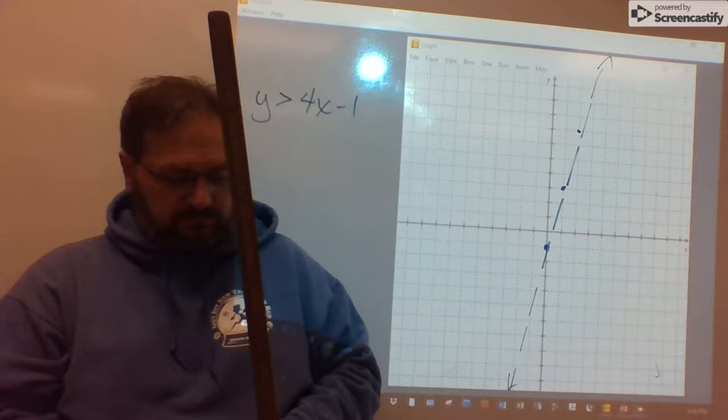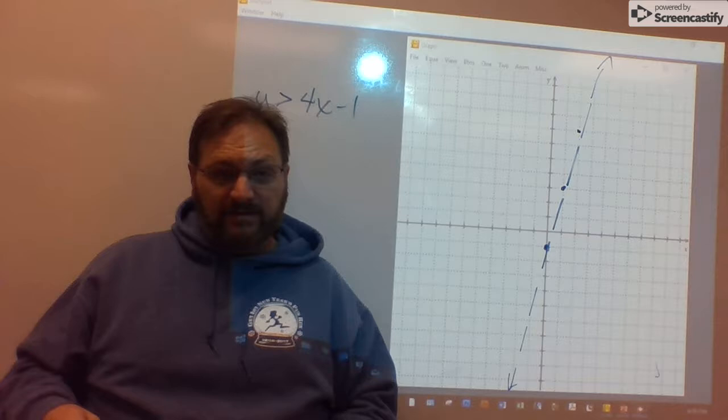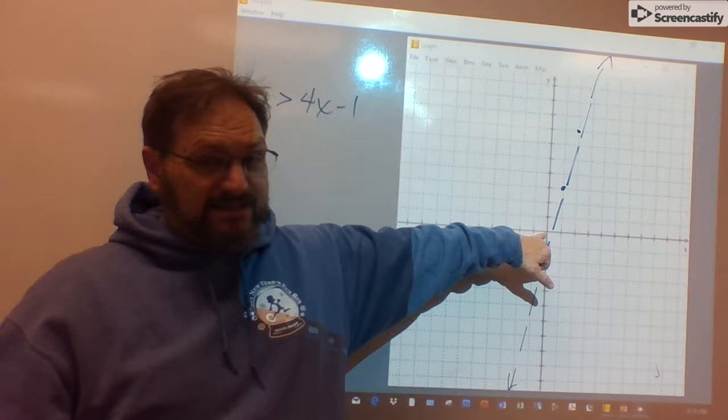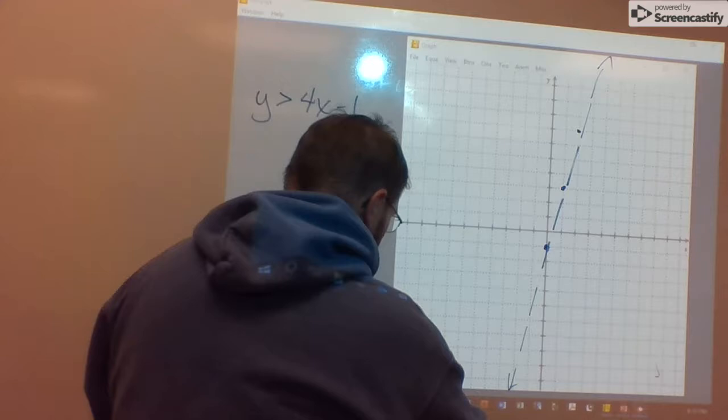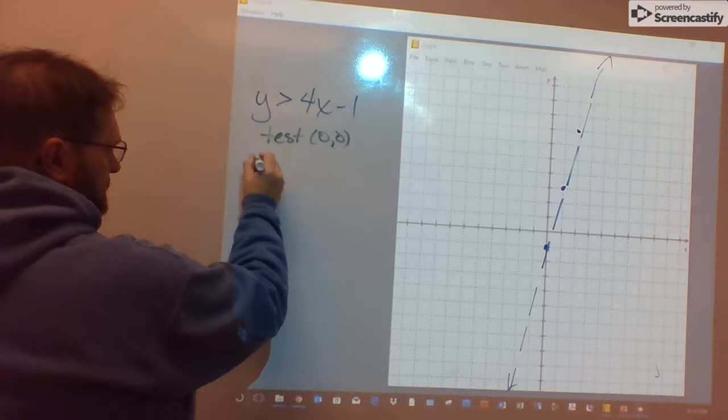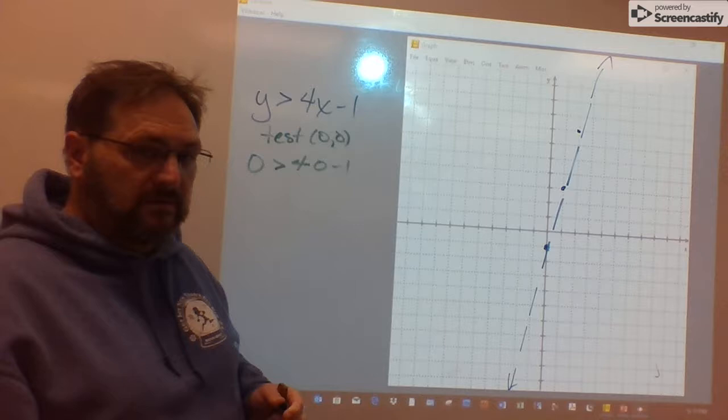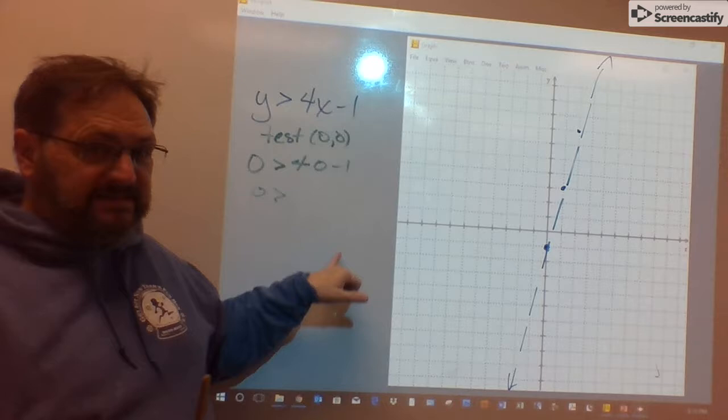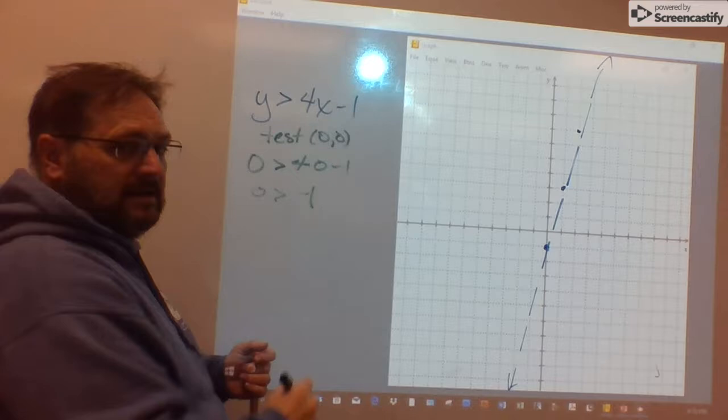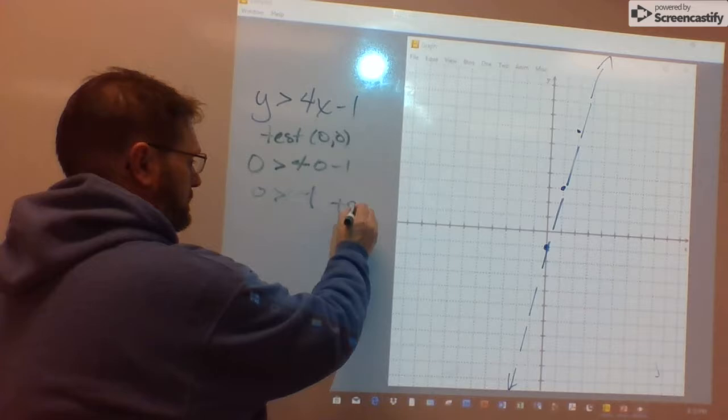But, as before, from this point, same idea. One side solves the inequality. The other side doesn't. Pick a test point. Our boundary gets very close to the origin, but doesn't quite go through it. We can use 0, 0. So, we plug it in. We plug in 0 for x, 0 for y, and see if our statement is true or false. The left side is 0. The right side, 4 times 0 is 0, minus 1 is negative 1. Is 0 greater than negative 1? You bet it is. That was another true sentence.